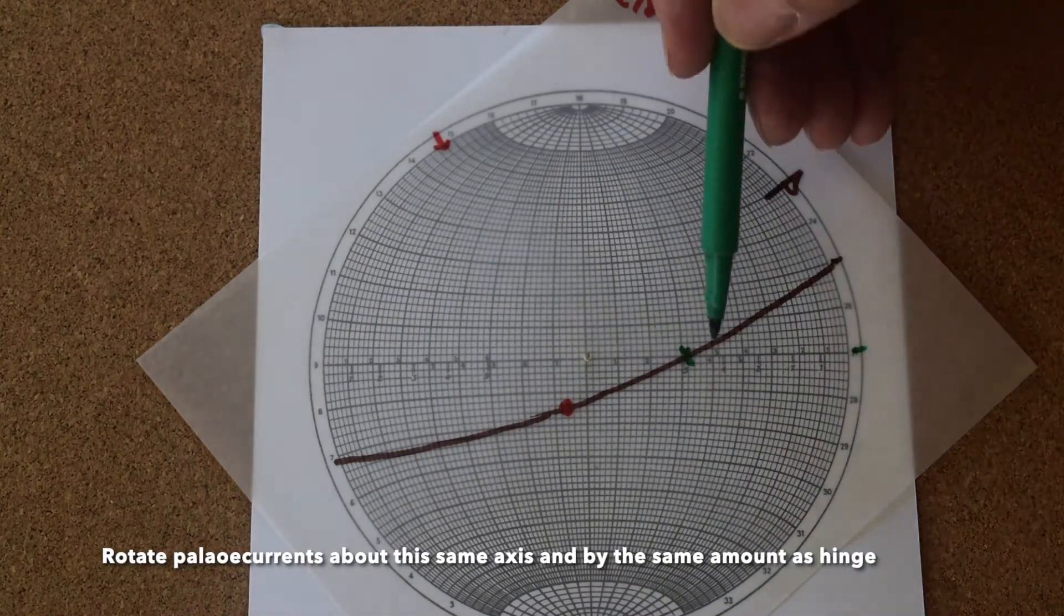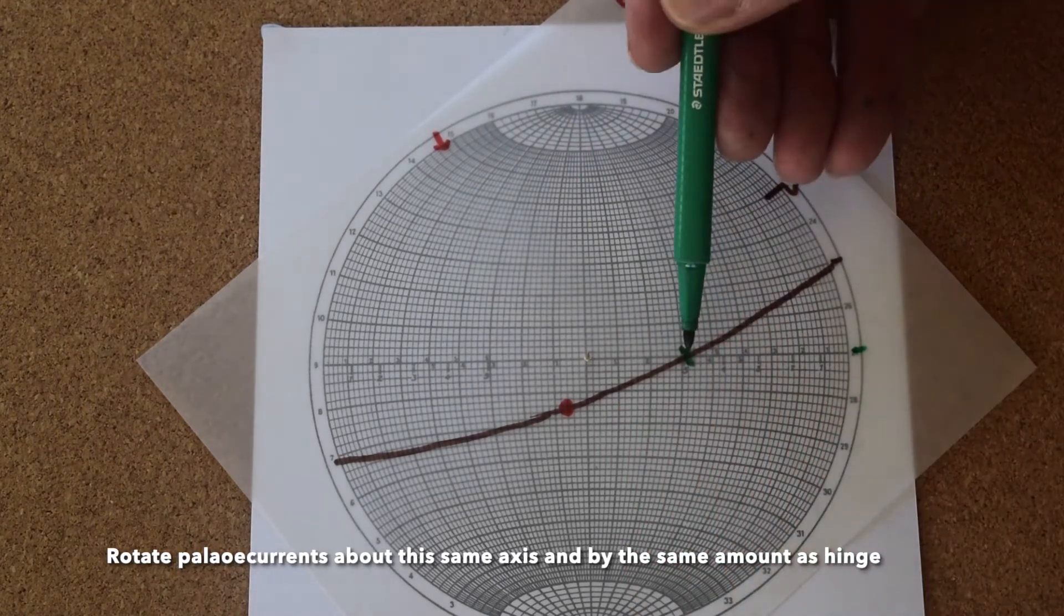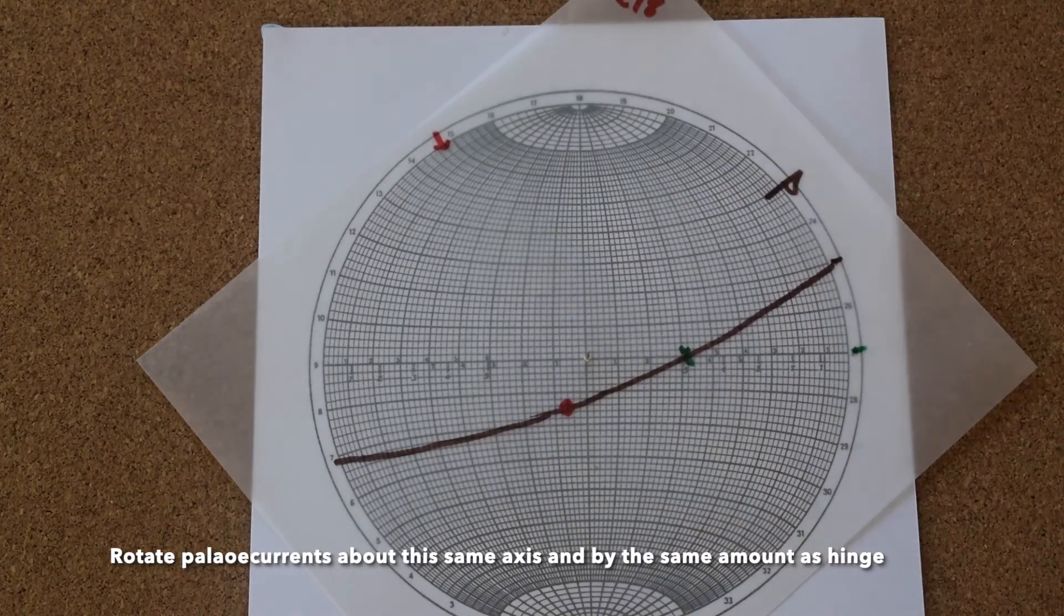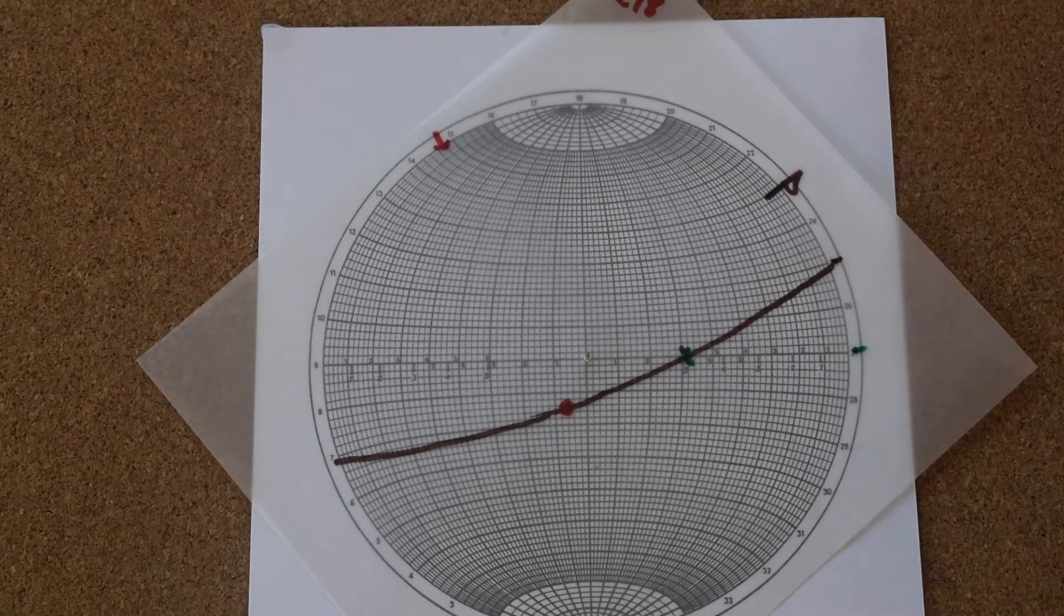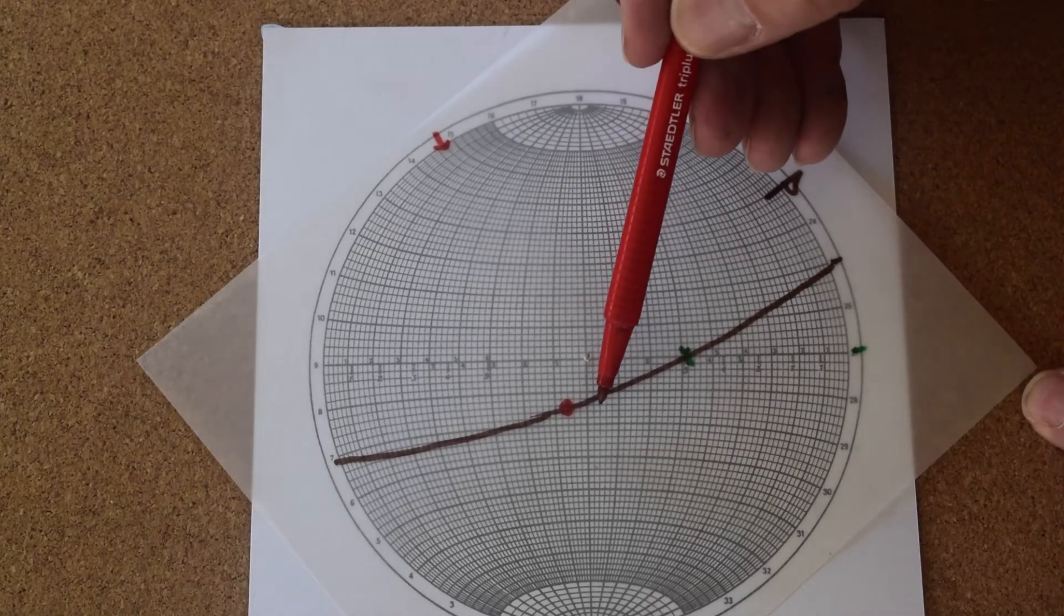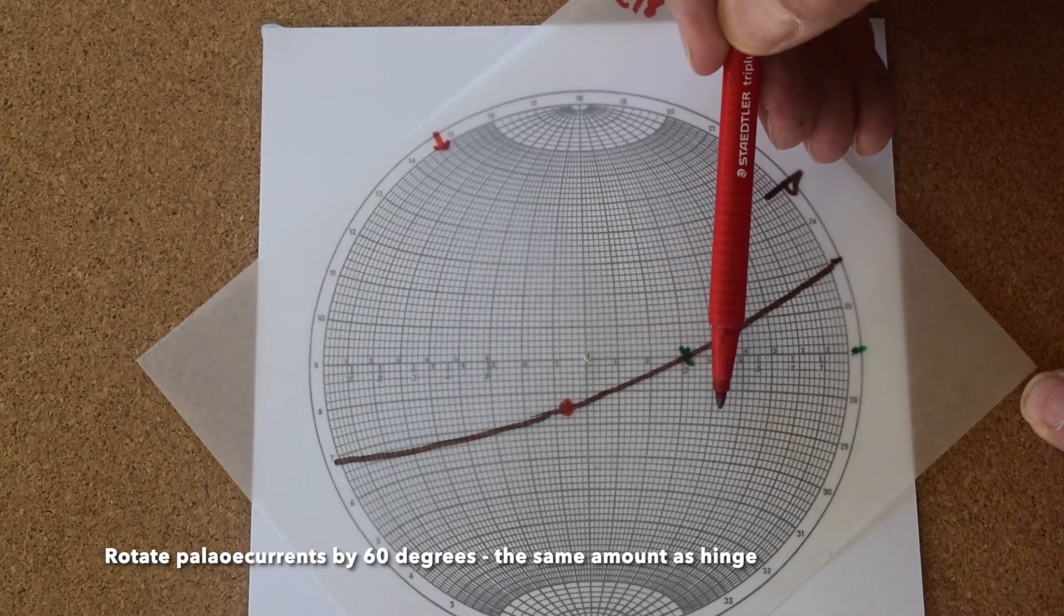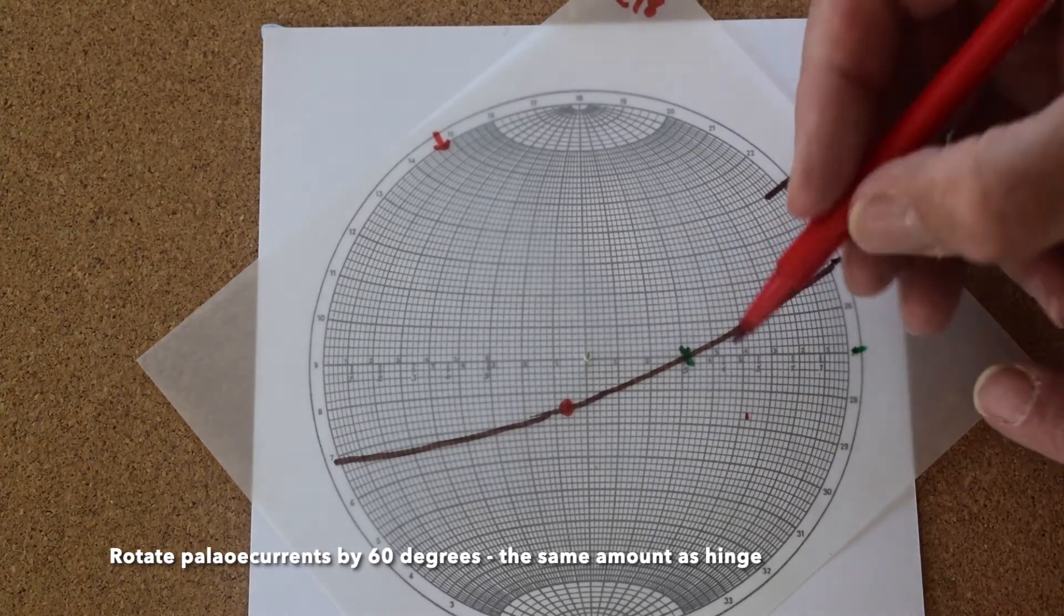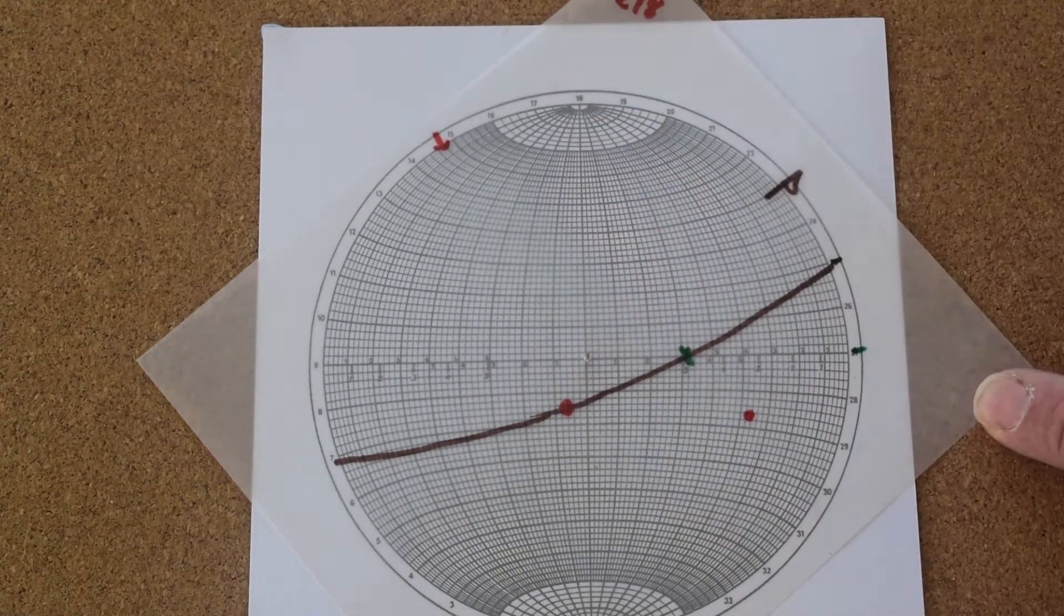So if we impose a 60 degree spin around this axis for the hinge line, then this point here, our paleocurrent, will also experience the same spin. And that puts it 10, 20, 30, 40, 50, 60, there. So that's where our paleocurrent comes out to.